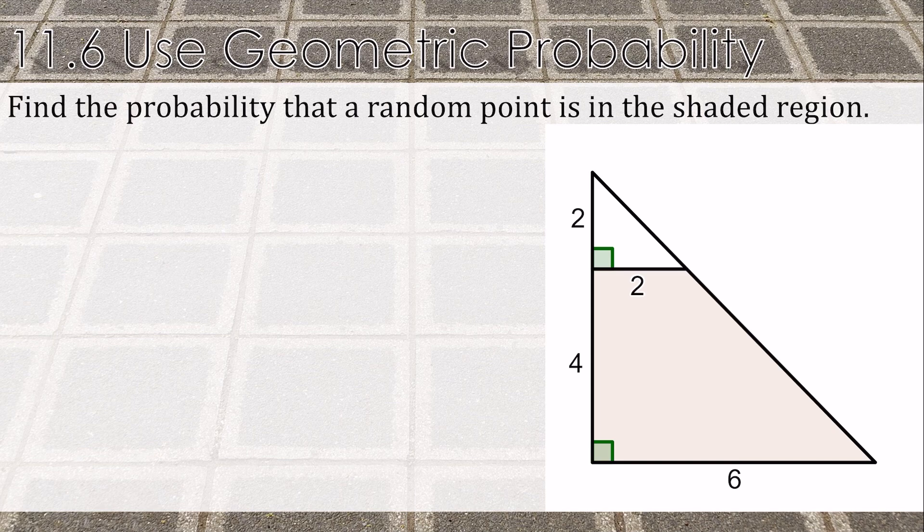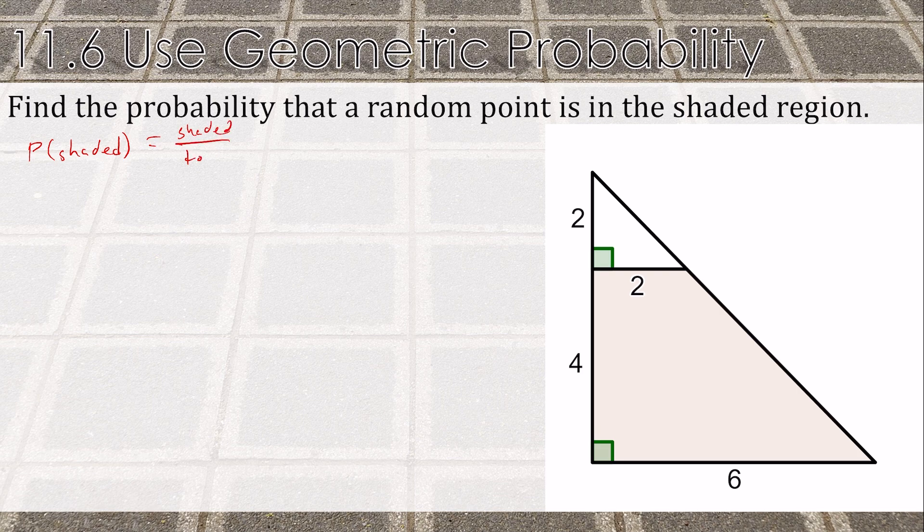Find the probability that a random point is in the shaded region. So we want the probability of the shaded part. That means this should be the shaded over the total. But what shape is the shaded? Our shaded is a trapezoid, and the total area is a triangle.